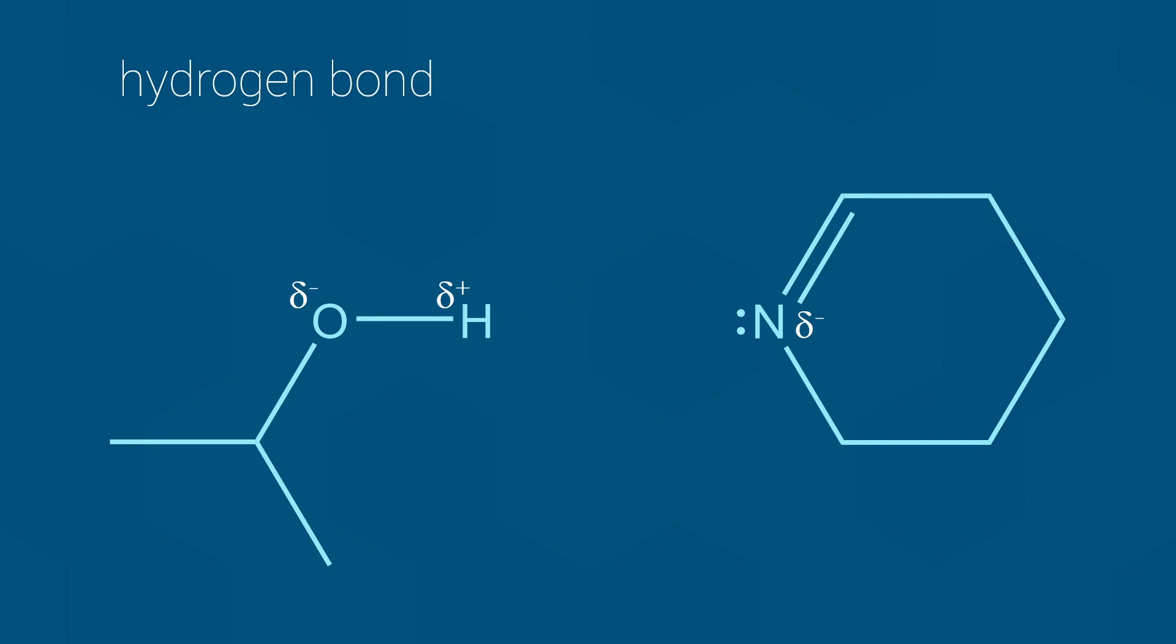Finally, I should mention that we have particular names for the two groups that form a hydrogen bond. The group that has the hydrogen atom is called the hydrogen bond donor since it provides the hydrogen for the hydrogen bond. The group with the lone pair of electrons is called the hydrogen bond acceptor.